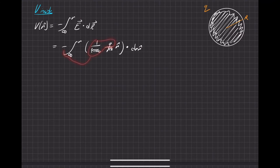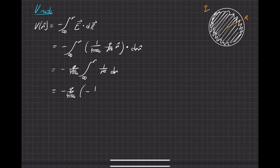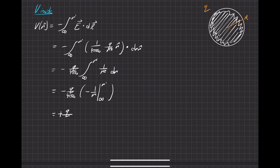We can move the constants out of the integral: Q over 4πε₀, from positive infinity to some point r prime, and now we just have 1 over r² dr as our integral. The integral gives us negative 1 over r, evaluated from r prime to infinity. That gives us positive Q over 4πε₀ times 1 over r prime. That's almost the exact definition we're used to working with for the potential.